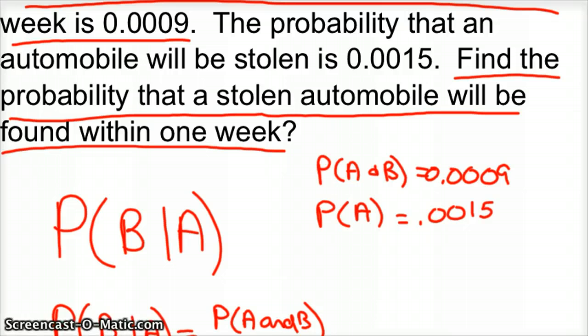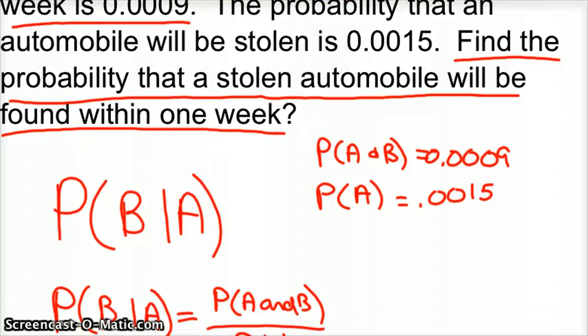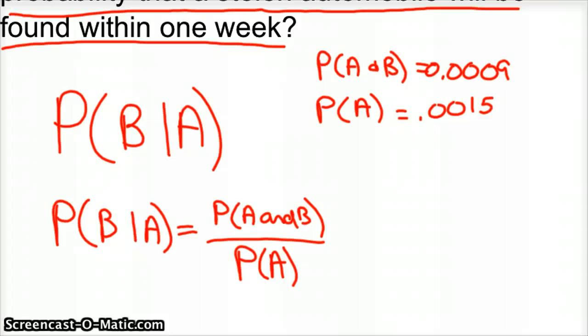but what that really says is find the probability that we will find a car within one week given that it was stolen. So we already know it's been stolen. Now what's the chances of getting it back this week? And that's where I was messing up when I initially looked at this problem. I didn't see it as a conditional probability.